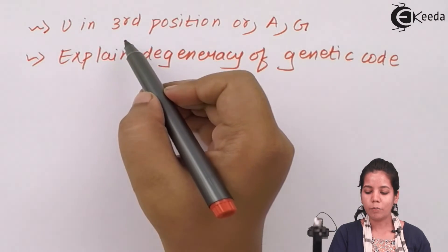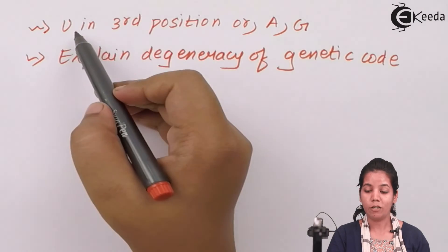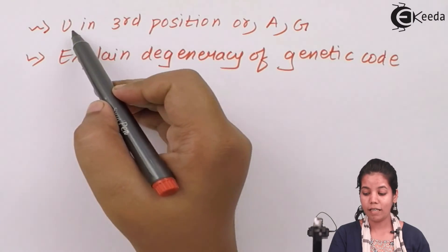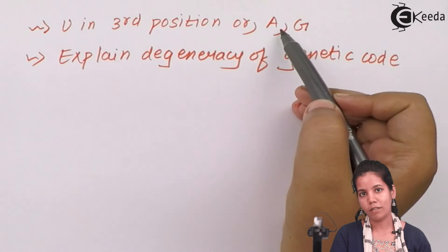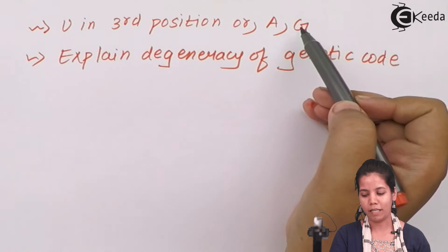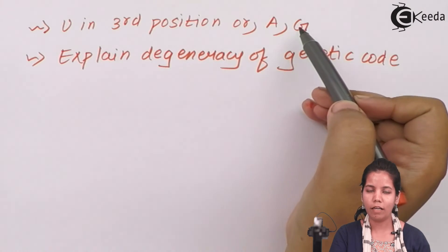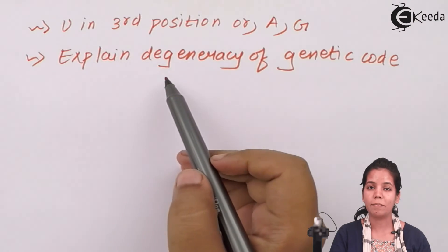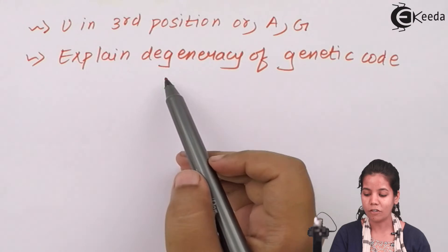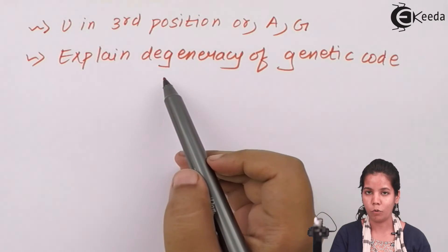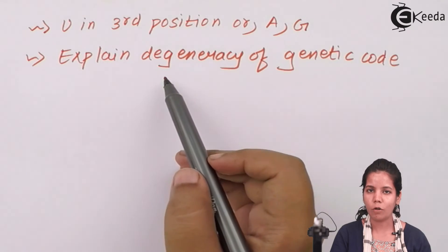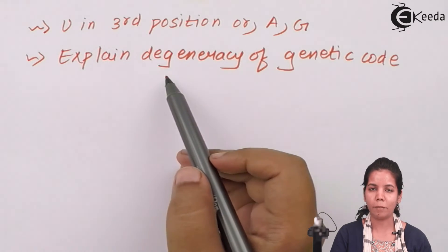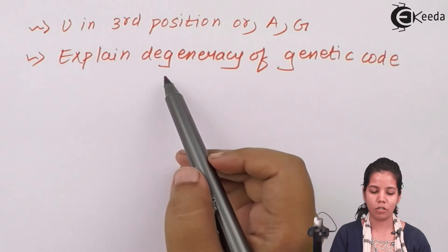At the third position, either U, A, or G can be present on the mRNA in case of wobble pairing. This wobble pairing explains the degeneracy of the genetic code — the genetic code can be slightly different or slightly changed.